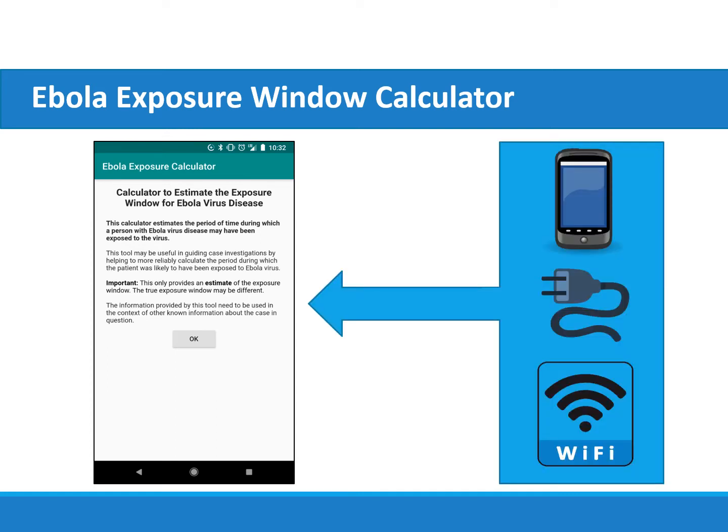Although the phone application has received a very positive response in the field, it requires the user to have a phone, electricity to charge the phone daily, and access to the internet in order to download the application and/or receive updates. If one of these three requirements is not available, the application cannot be used. This is especially true in rural environments.